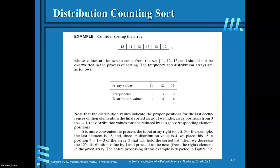Consider this array. The elements of the array are coming from the set {11, 12, 13}. Here, 11 is appearing only once, 12 three times, and 13 two times. You already know what kind of elements will be there in the array — it is falling in a particular range. Here, the range is 11 to 13, that is, upper limit is 13 and lower limit is 11. So, whenever you have elements like this, you can sort these elements of the array by distribution counting sort.